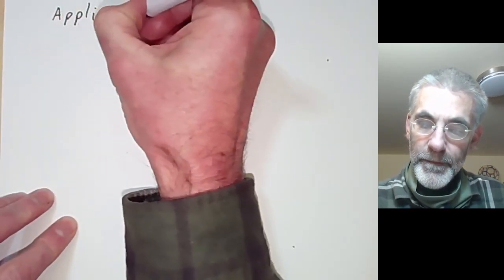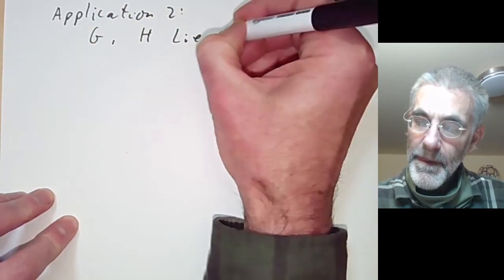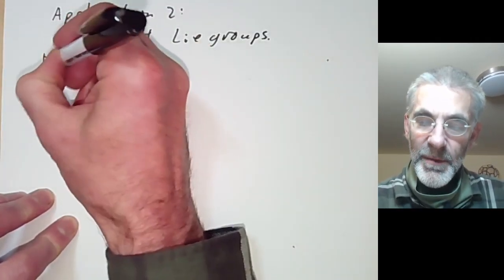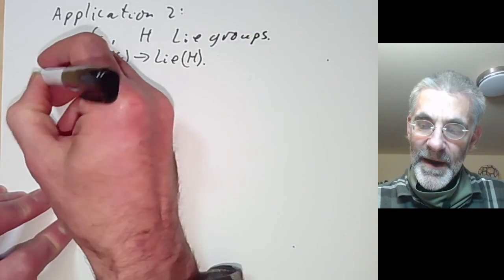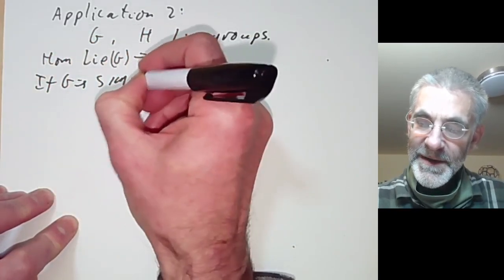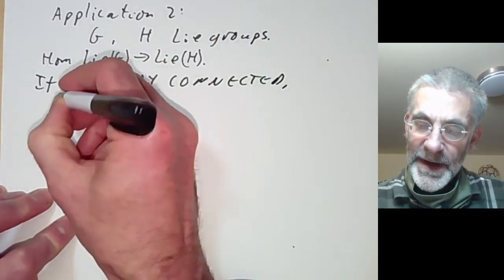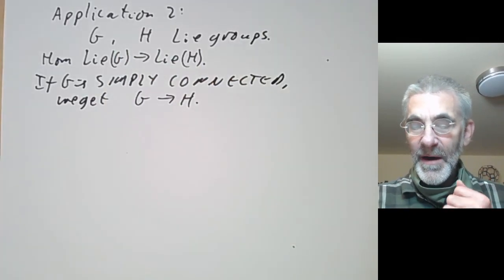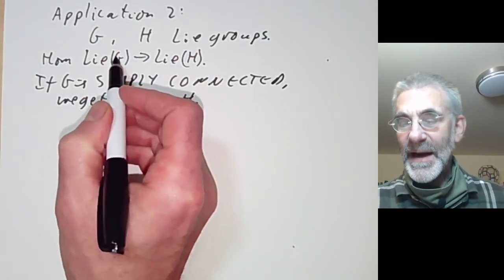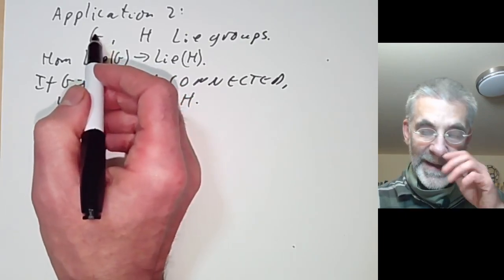The next application: suppose G and H are Lie groups and suppose we have a homomorphism from the Lie algebra of G to the Lie algebra of H. If G is simply connected, we get a homomorphism from G to H induced by this. Obviously if G isn't connected we have little hope of finding a homomorphism in general, because the Lie algebra can only see the connected component of G.